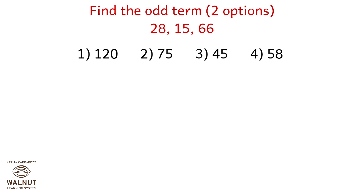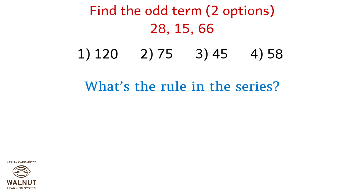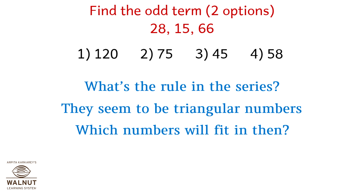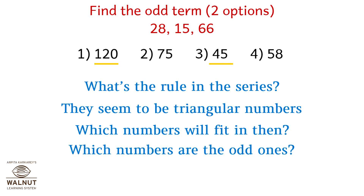Find the odd term — two options for the given series. The numbers given are 28, 15, and 66. They seem to be triangular numbers. Numbers like 120 and 45 fit in. So which are the odd ones? 75 and 58.